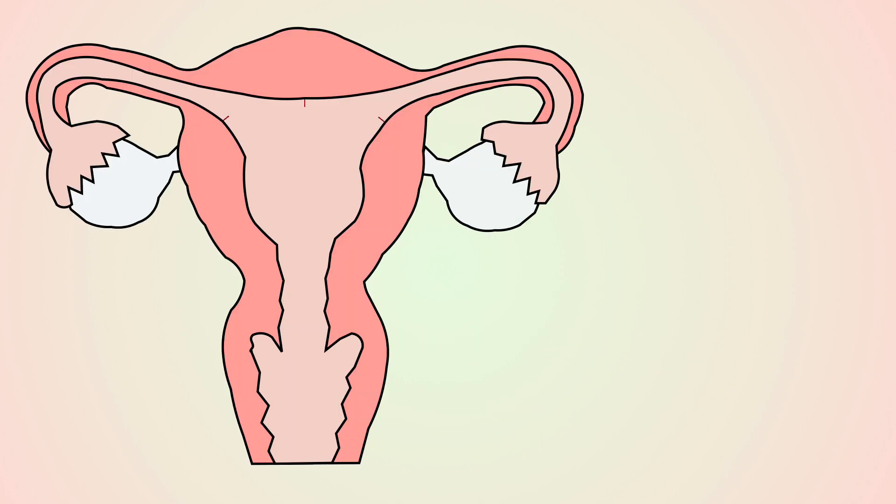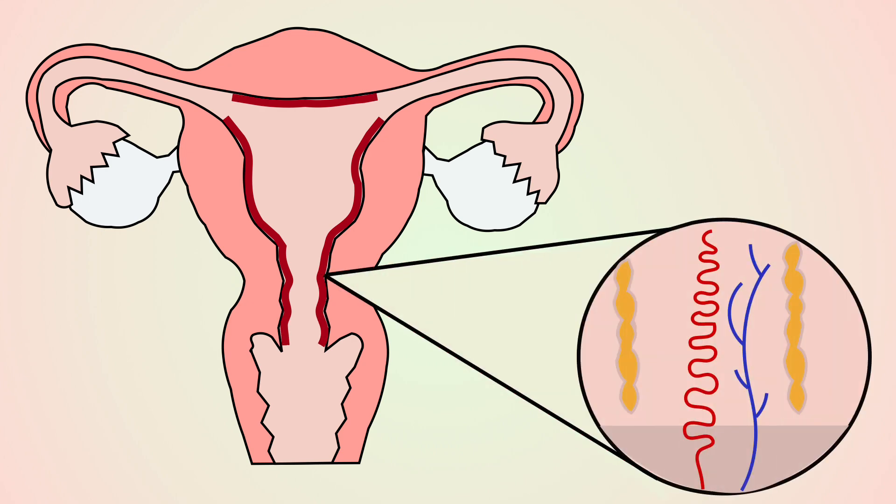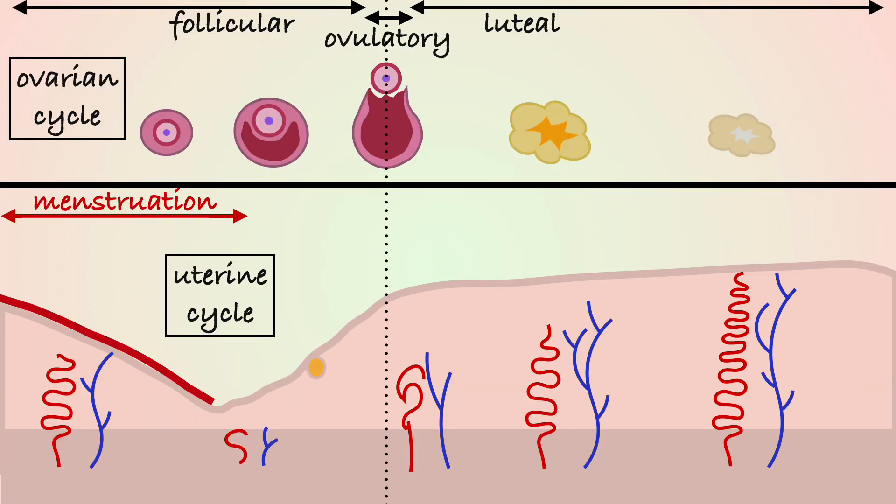The endometrium is the inner lining of the uterus and consists of a basal layer and a functional superficial layer that is eliminated during menstruation following a process of ischemia and is regenerated from the basal layer.